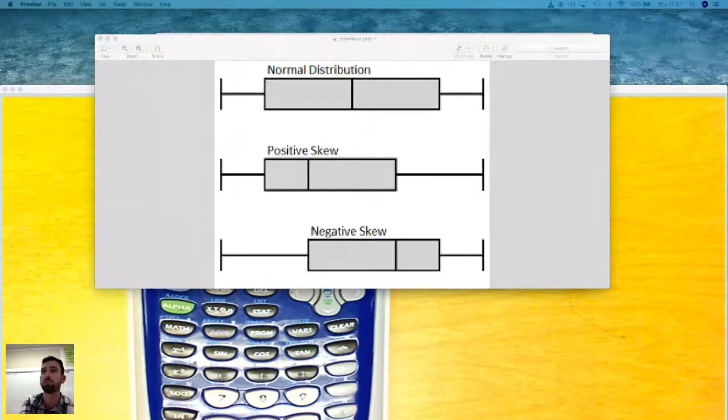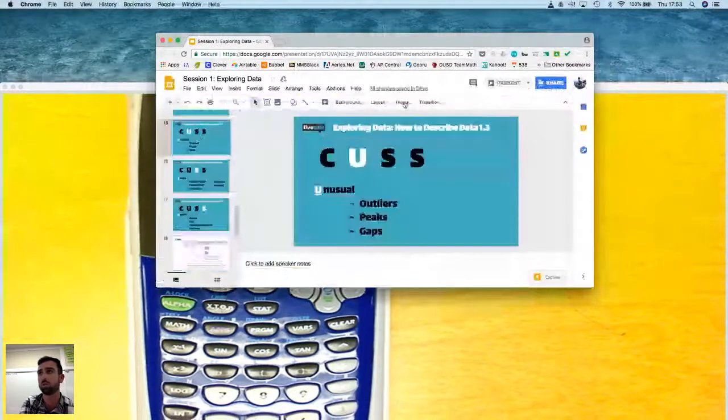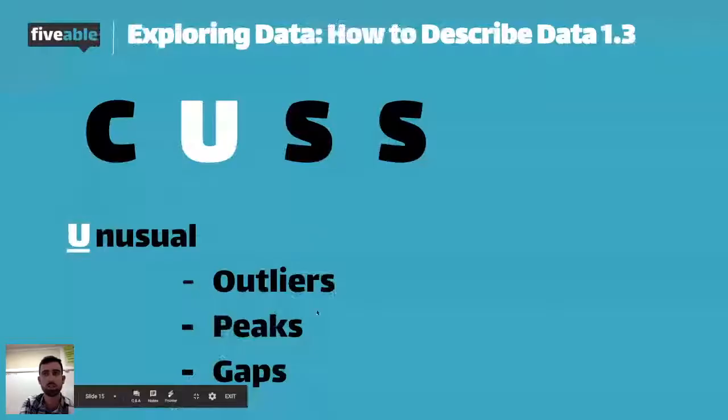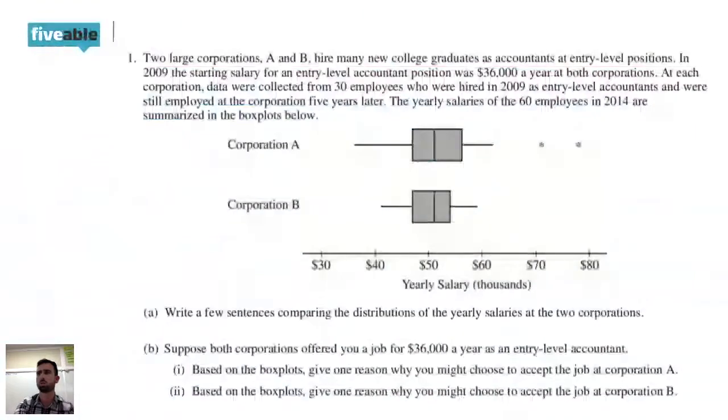Great question, Kevin. No, you don't always have to mention unusual points in the distribution if there are none. So I'm going to go back to the unusual. If none of these exist, you don't have to talk about it when describing the distribution. You can say there is nothing unusual about the distribution, and that'll be fine. But you don't have to. And so I'll go back to this one right here.